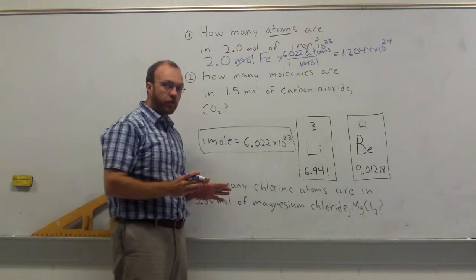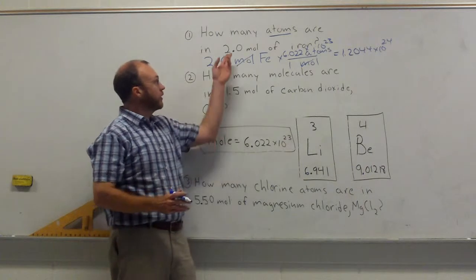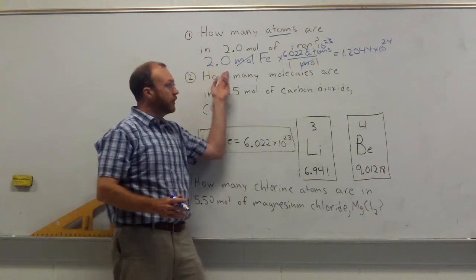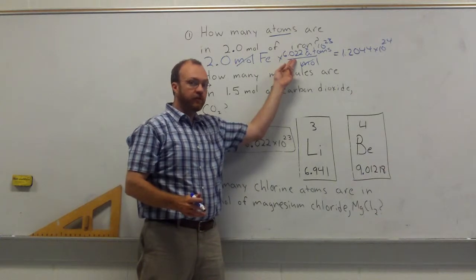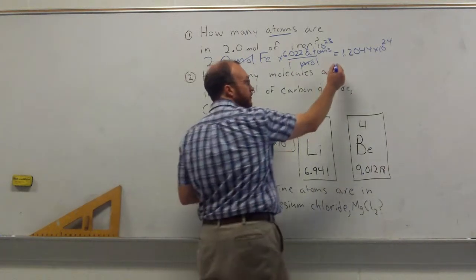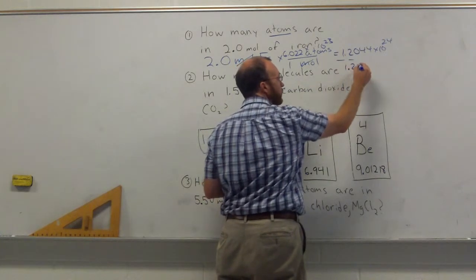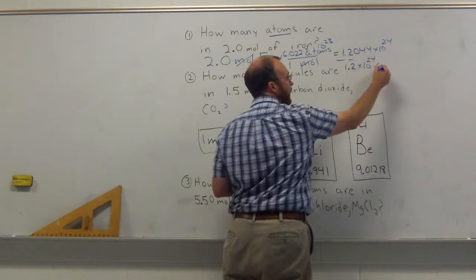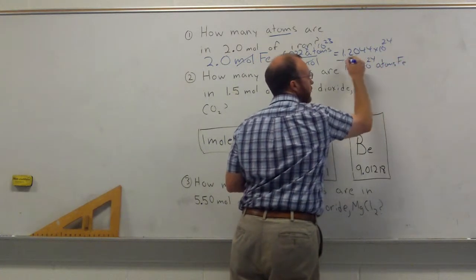Now I also want to review your significant figure rules. Our original measurement only had two significant figures, and Avogadro's number has four significant figures. Two is less, so we round our answer to two significant figures. We call this 1.2 times 10 to the 24th atoms of iron.